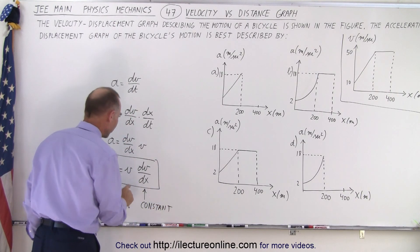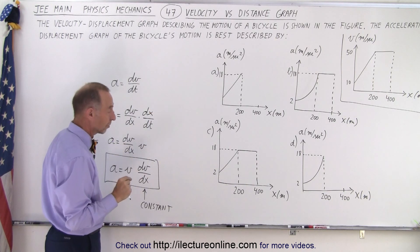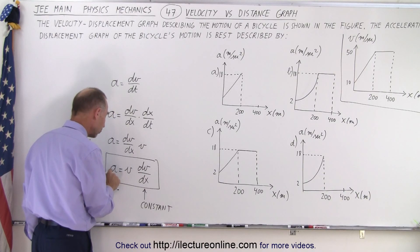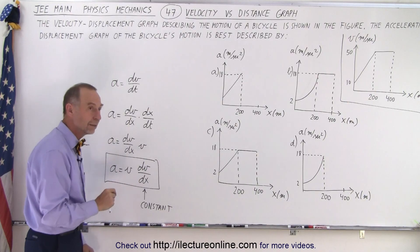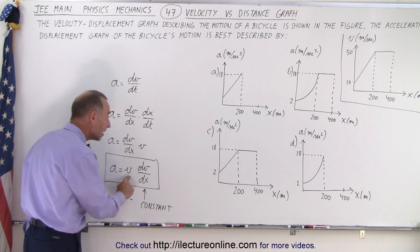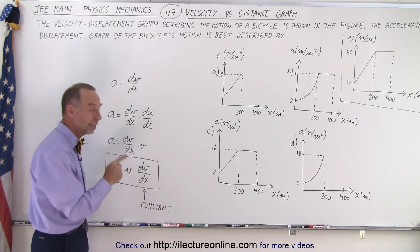And therefore v changes in a linear sense. And so if acceleration is equal to v times a constant, then the acceleration must be, well, it must change, but change linearly because v is a linear function in our graph. So therefore, a must change linearly.